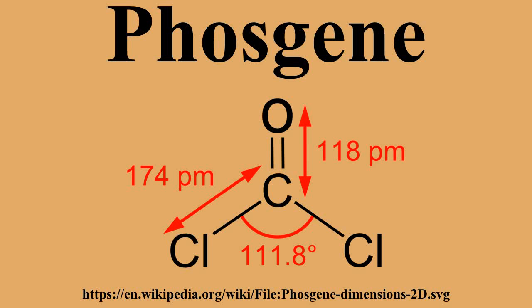Industrially, phosgene is produced by passing purified carbon monoxide and chlorine gas through a bed of porous activated carbon, which serves as a catalyst: CO + Cl2 → COCl2. The reaction is exothermic, therefore the reactor must be cooled. Typically, the reaction is conducted between 50 and 150 degrees Celsius. Above 200 degrees Celsius, phosgene reverts to carbon monoxide and chlorine; Keq equals 0.05.